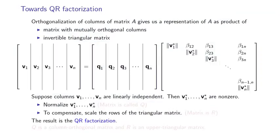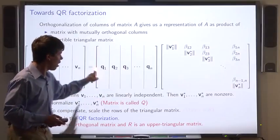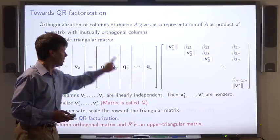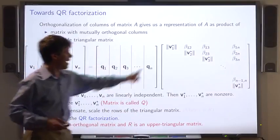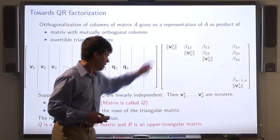This is called the QR factorization of the matrix formed by the original vectors v1 through vn. In this case, the matrix whose columns are q1 through qn is called q. And the upper triangular matrix is called r.